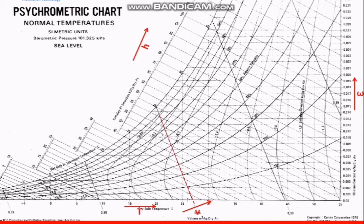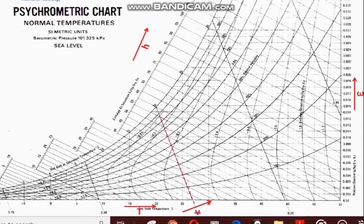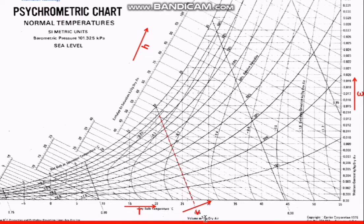Also on the chart, these diagonal lines here represent the specific volume, given in cubic meters per kg dry air. So this is the volume per kg dry air, shown by these lines across the chart.